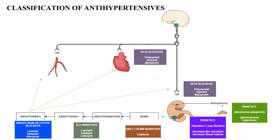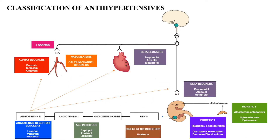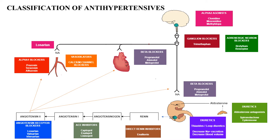Beta blockers act at two levels — the heart and the vascular system; all the '-olol' drugs are beta blockers. Alpha blockers act at the blood vessels: prazosin, terazosin, alfuzosin. Other vasodilators are calcium channel blockers, hydralazine, minoxidil, and fenoldopam. Losartan additionally has vasodilatory properties. Drugs reducing central sympathetic discharge include alpha-2 agonists such as clonidine, moxonidine, and methyldopa; ganglionic blockers such as trimethaphan; and adrenergic neuron blockers such as bretylium and reserpine.